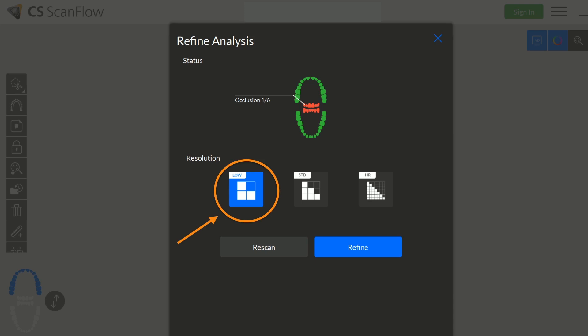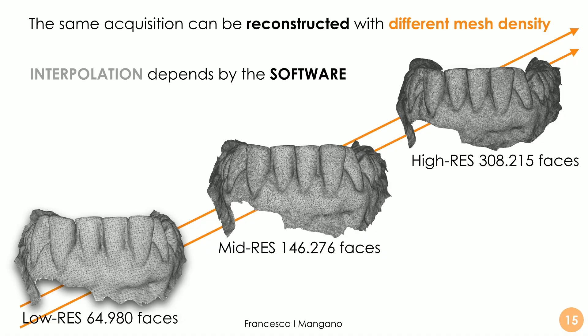This is an example from the Scan Flow software from Carestream Dental. After acquiring the master model, antagonist, and bite registration, we can refine the image and choose among different resolutions. A low resolution may be appropriate for study models or orthodontic 3D printing, medium resolution for designing a surgical guide, and high resolution is highly recommended for prosthodontic applications. The software makes the difference — cameras are powerful in almost all scanners.